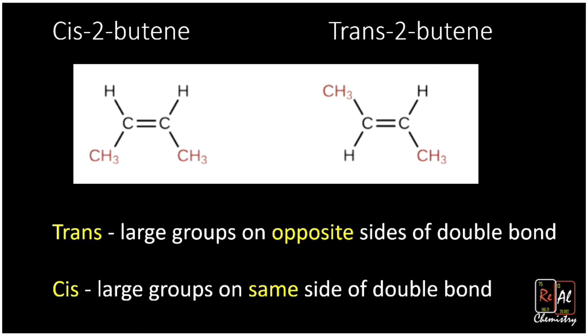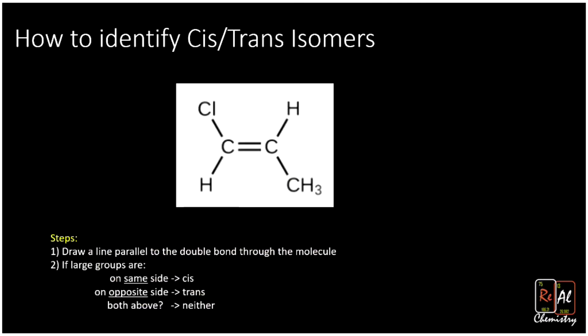And now let's work a bunch of practice problems where we go through and tell the difference between compounds deciding if they are cis or trans. How are we going to do that? Well, here's the steps. We're going to draw a line parallel to the double bond through the molecule. And if the large groups are non-hydrogen groups, if the non-hydrogen groups are on the same side, then it's cis. If they're on opposite sides, then it's trans. And if they seem to kind of follow both, then it's actually neither cis nor trans.